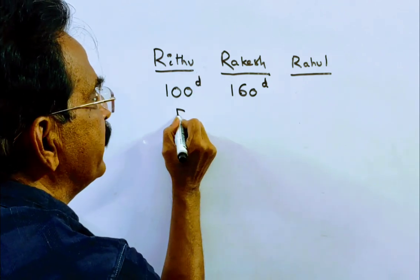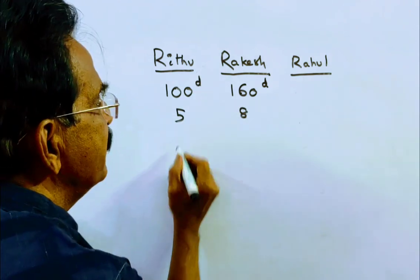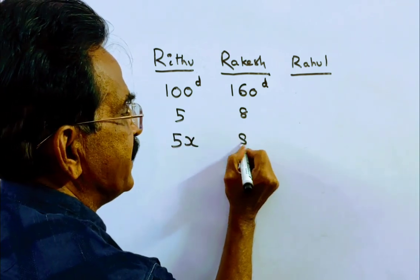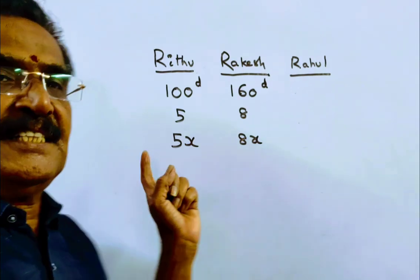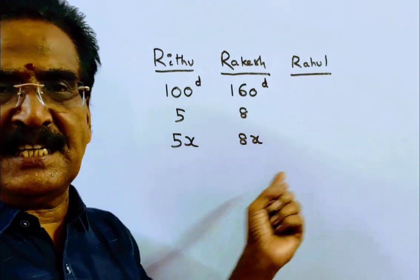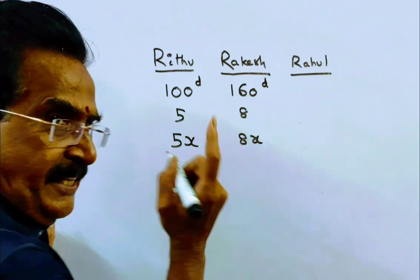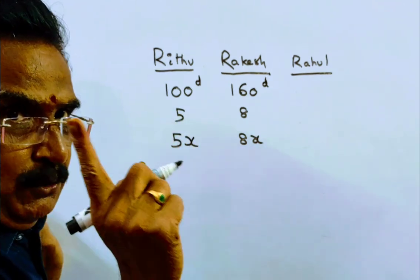So, the days ratio is equal to 25 to 28. That means Ritu takes 5x days, Rakesh takes 8x days. First, the difference is given. The difference is 18 days. Friends, here the difference is 3x. 3x is equal to 18, x is equal to 6.